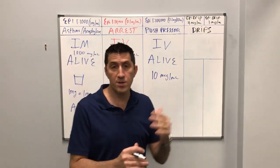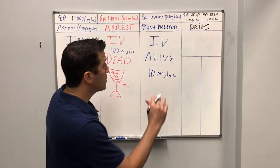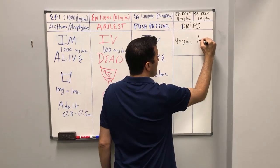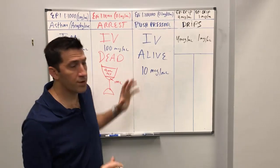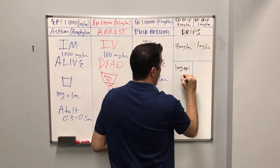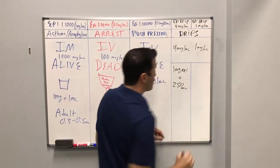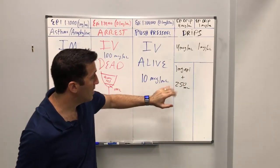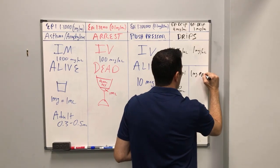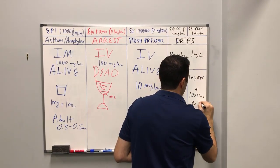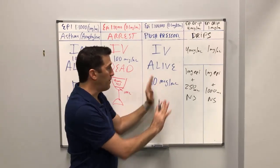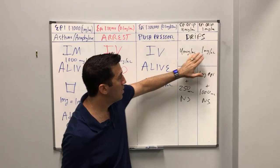For those who want to continue something after the patient's improved, we move to the more dilute version of epi. There's 4 mcg per ml and 1 mcg per ml. To make 4 mcg per ml: take 1 mg of epi and add it to a 250 ml bag of normal saline. To make 1 mcg per ml: take 1 mg of epi and add it to a 1 liter bag of normal saline. So we went from 1,000 mcg per ml, to 100 mcg per ml, to the alive epi at 10 mcg per ml quick-and-dirty way, to 4 mcg per ml, or 1 mcg per ml — these are basically equivalent.